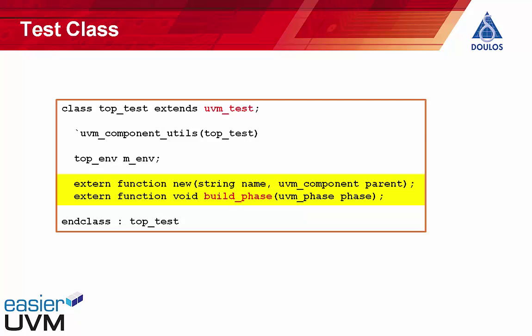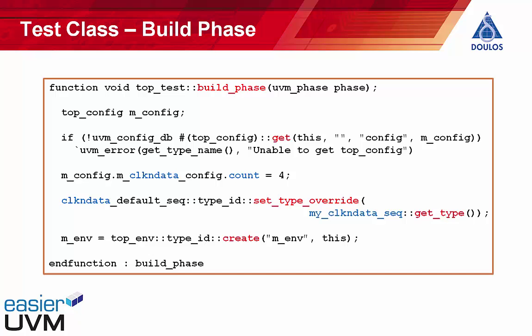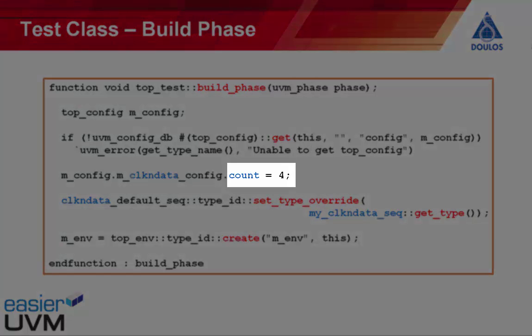Now let's take a look at the build phase method for that test. This build phase method illustrates the two things we would typically do in tests: set variables in the configuration database and make factory overrides. This particular test is setting the value of a variable within a configuration object, where that configuration object is part of a hierarchy of configuration objects that have all been set into the configuration database by the top-level module.